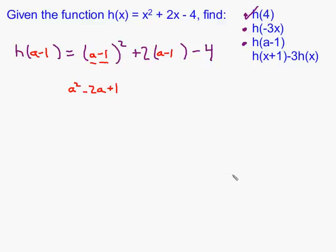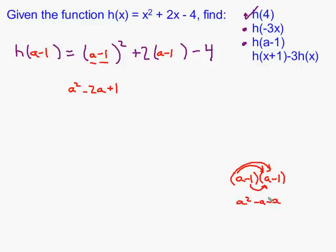If you've never seen the symbolism before: a minus 1 squared means to multiply it by itself. When you see it that way, you probably remember to FOIL. Multiply the first terms: a times a is a squared. Outside: a times negative 1 is negative a. Because you're squaring a binomial, you get another copy — another negative 1 times a — so two copies gives negative 2a. Finally, negative 1 times negative 1 is positive 1.